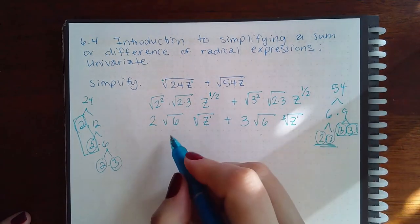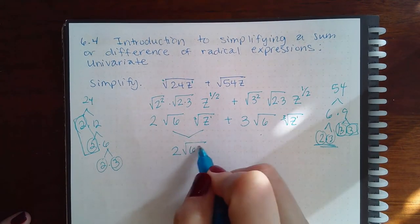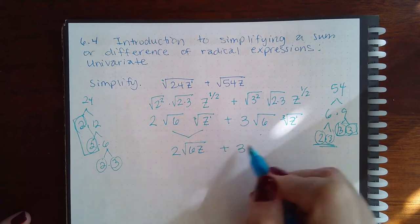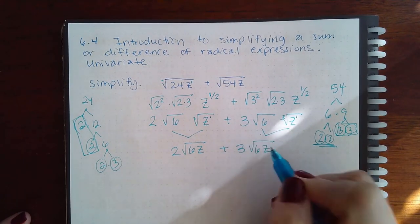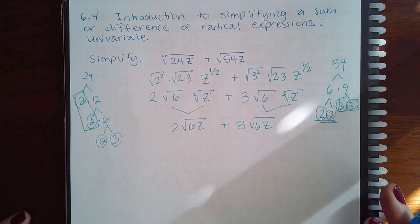So then I can multiply the 2 radical parts together and get 6z. I can multiply these 2 radical parts together and get 6z. Now they are like terms.